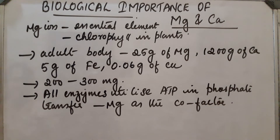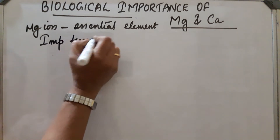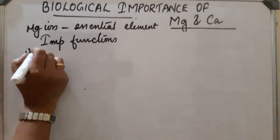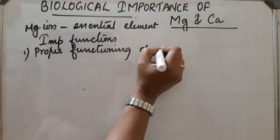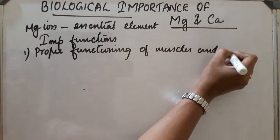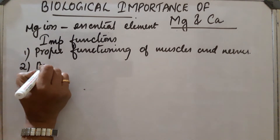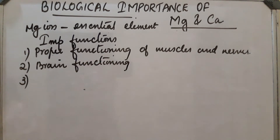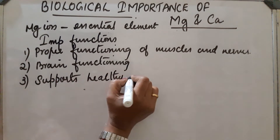Important functions of magnesium: first, it is used for the proper functioning of muscles and nerves. Second, it is used for brain functioning. Third, it supports a healthy immune system.